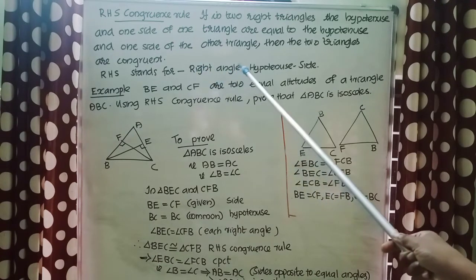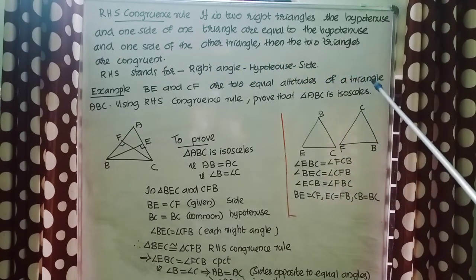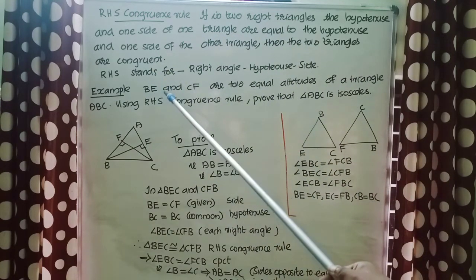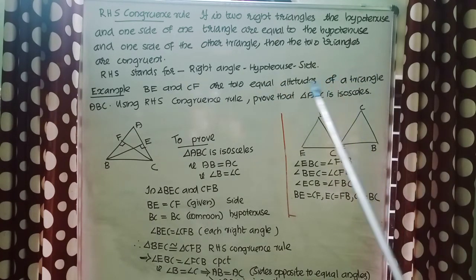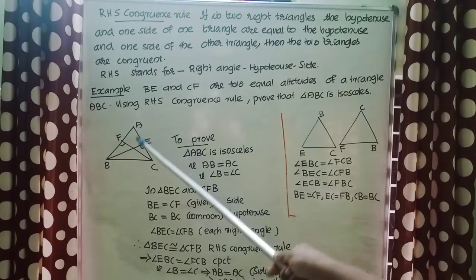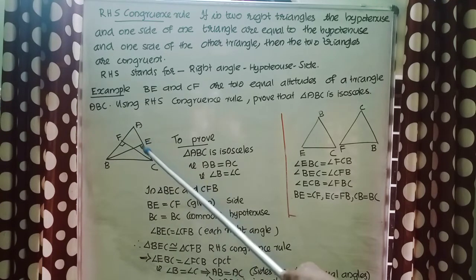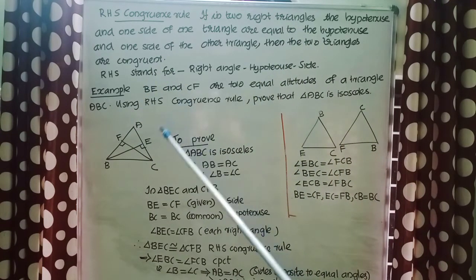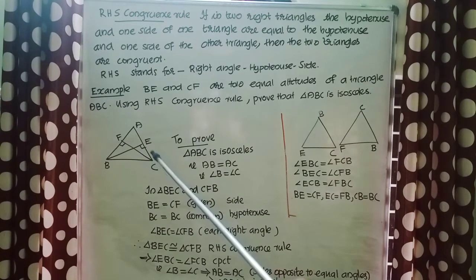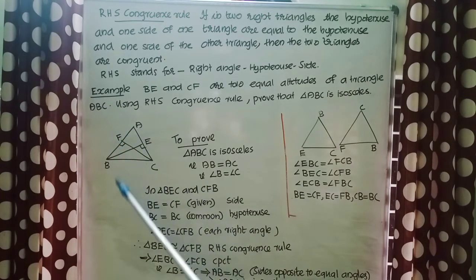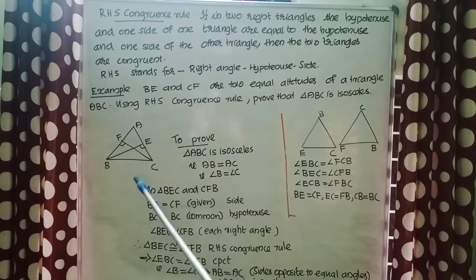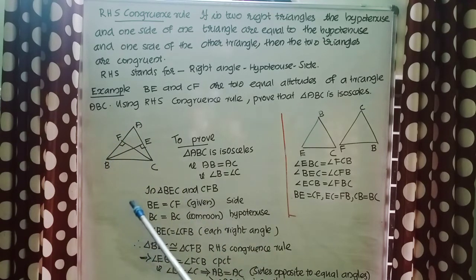BE and CF are two equal altitudes of triangle ABC. Using the RHS congruence rule, prove that triangle ABC is isosceles. An altitude is a line segment drawn from one vertex perpendicular to the opposite side, making a 90-degree angle. So angles BEC and CFB are both right angles.